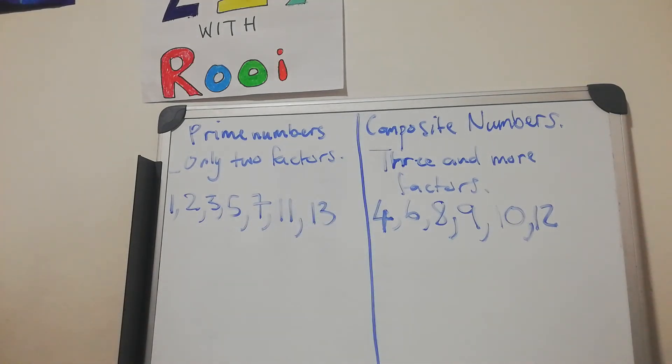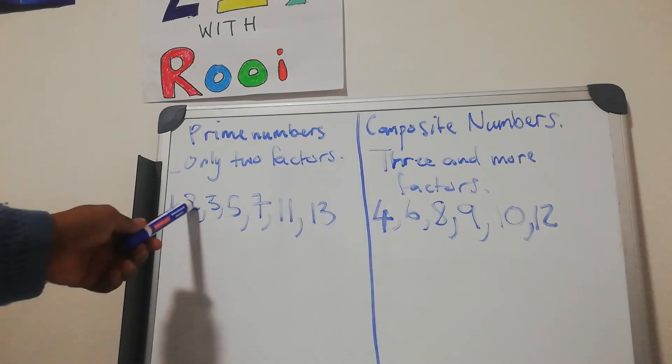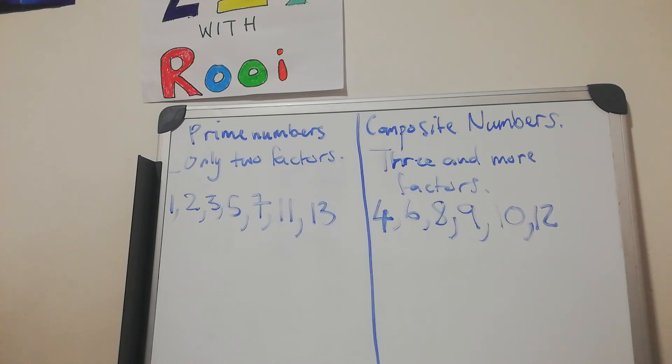We are going to stop here at thirteen, but you see what is happening here. And remember, prime numbers are not necessarily uneven or odd numbers only. It can be even numbers as well. Two is an even number.